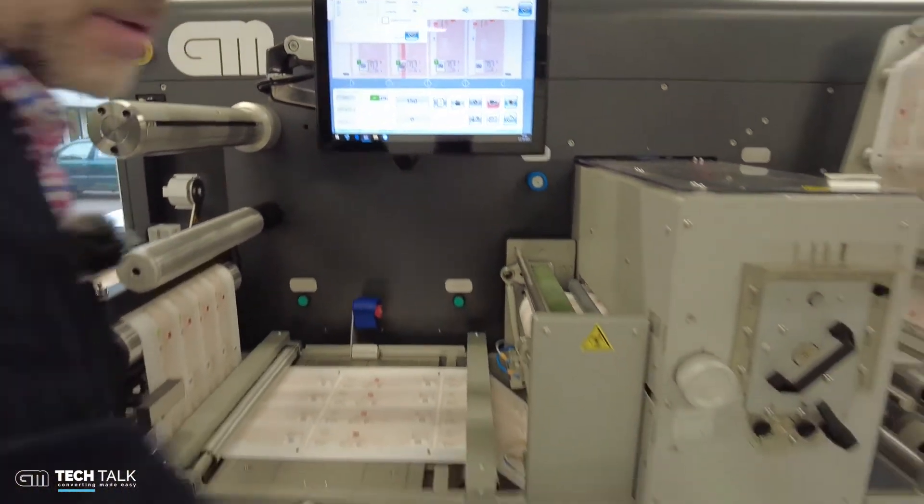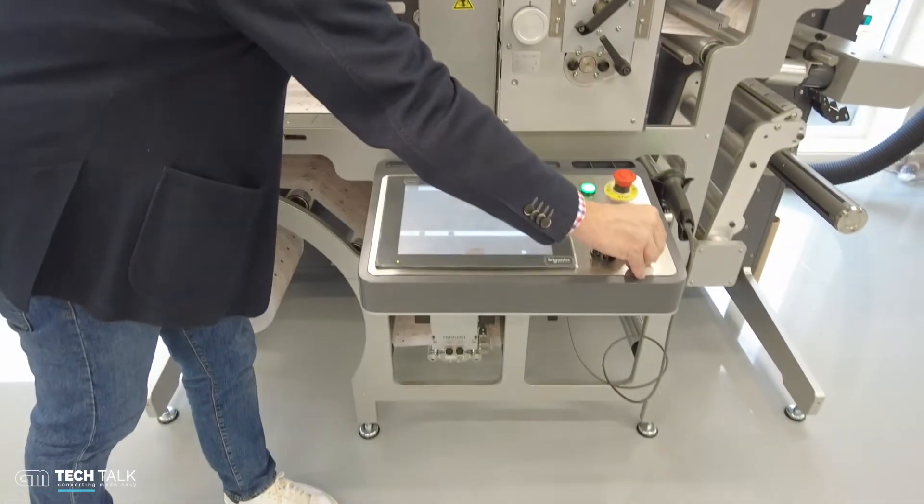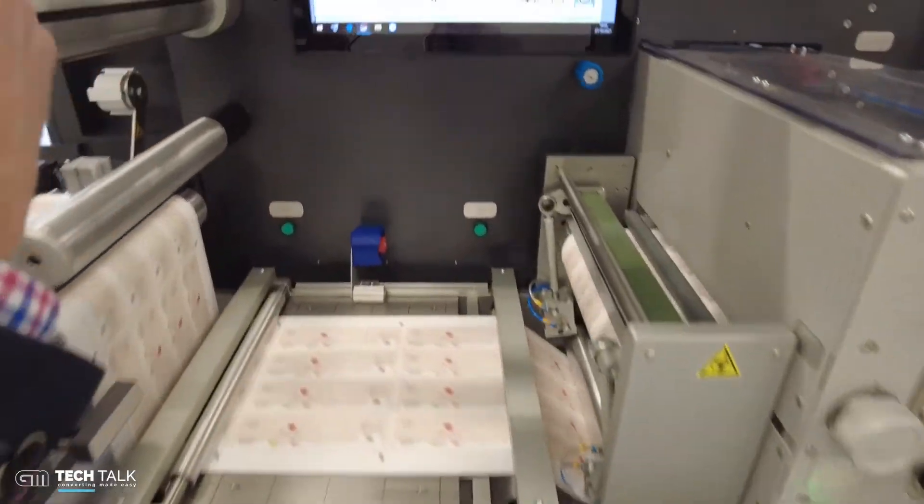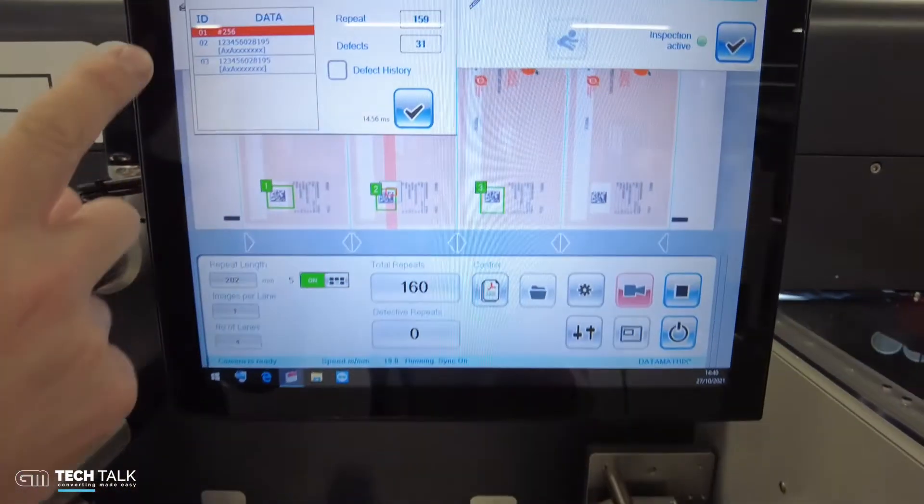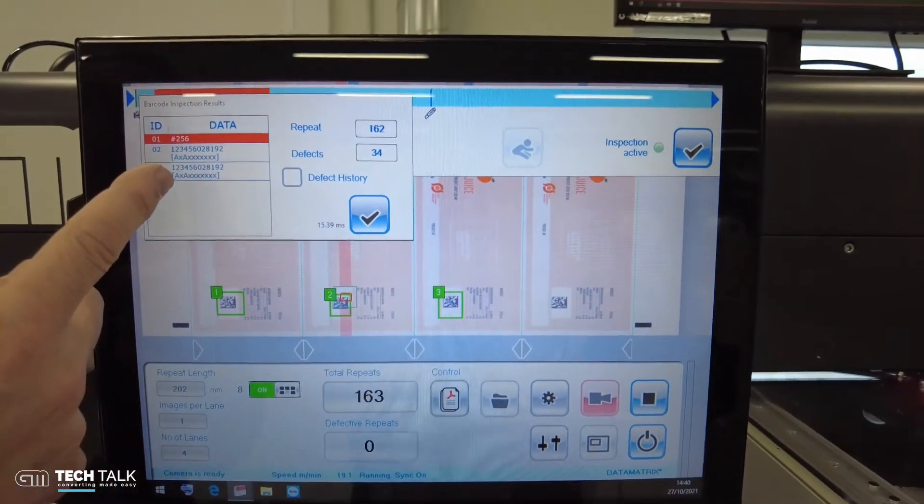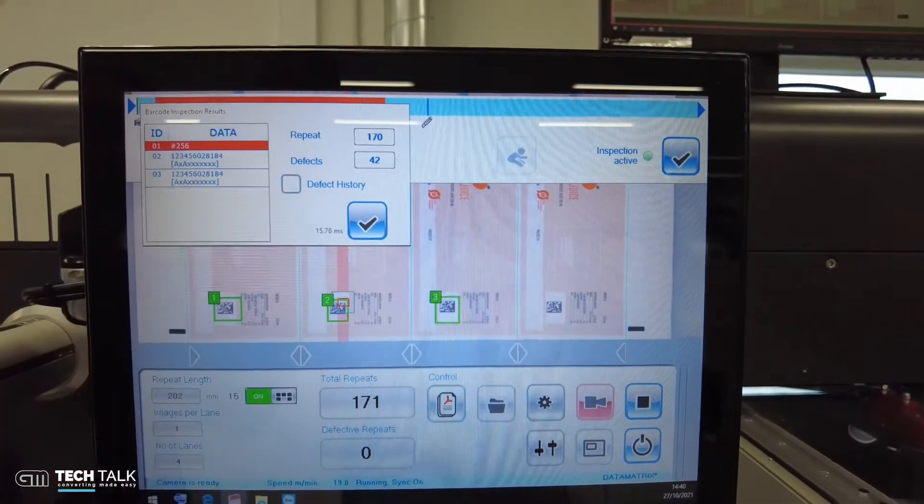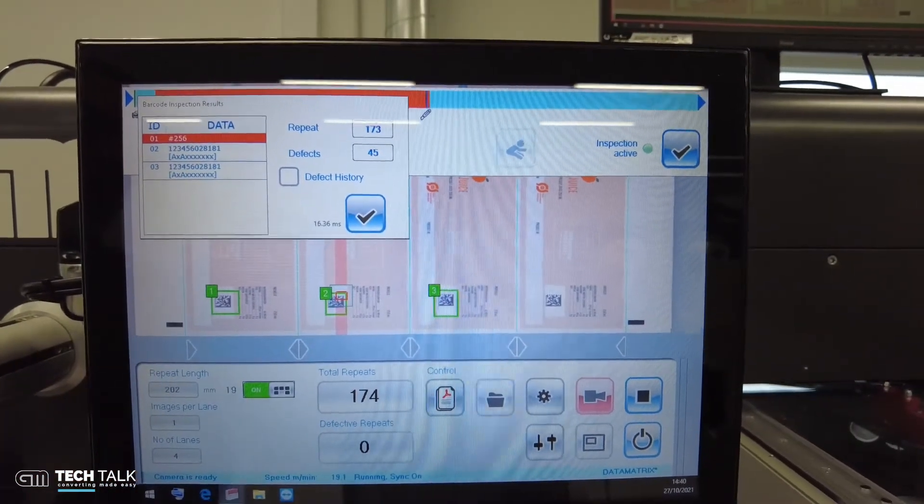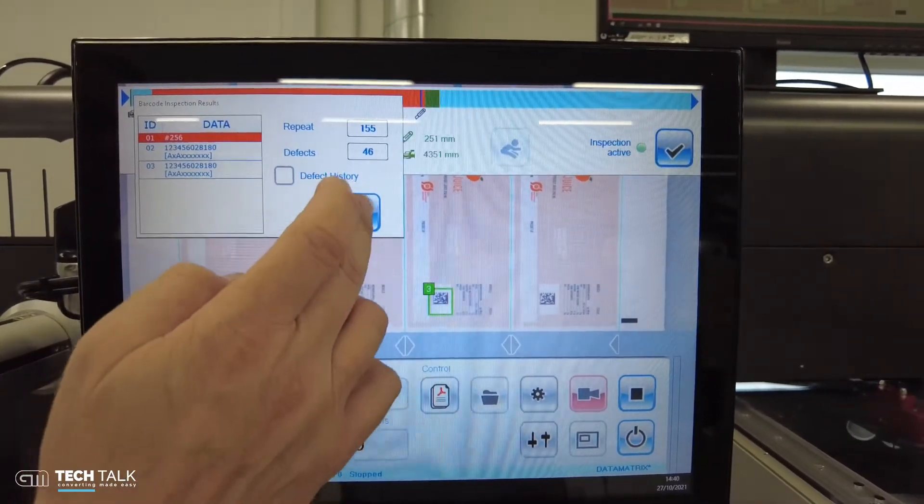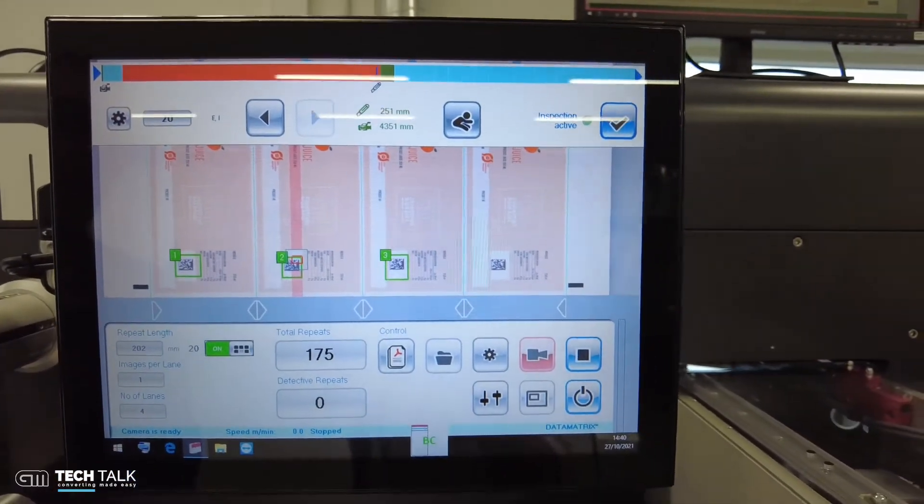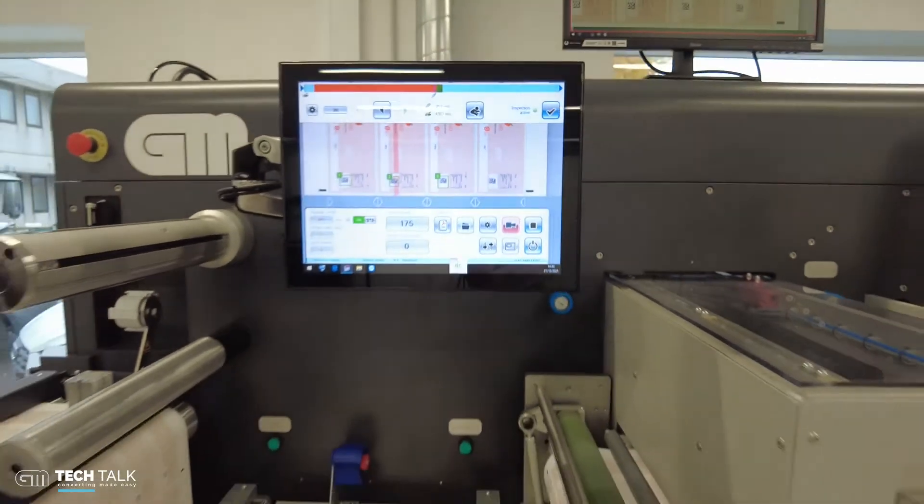I will start the machine and you will get the result of the inspection on the main screen. We will show you the content of the codes, the grading result, and we will bring these results onto display. That's how the TubeScan makes a very simple, reliable 100% inline barcode control. Thanks for your attention.